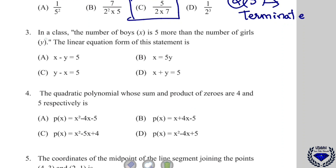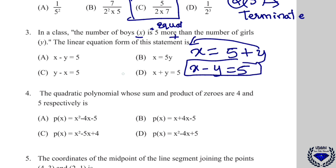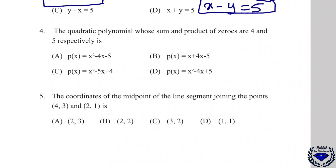Question number 3: in a class, the number of boys X is 5 more than the number of girls Y. 'More' means plus, so X = Y + 5. Transferring Y to the left side gives X − Y = 5, which matches option A. Option A is the correct answer.